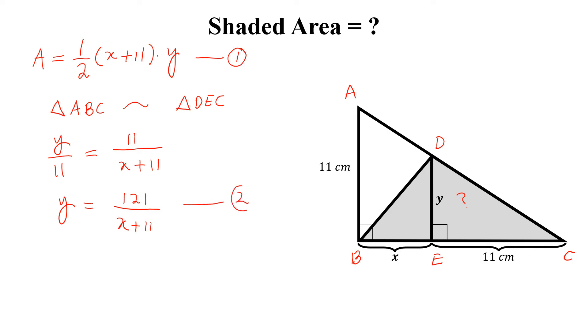We will put this value in equation 1. So A equal to half of X plus 11 into 121 divided by X plus 11. This is cancelled with this.